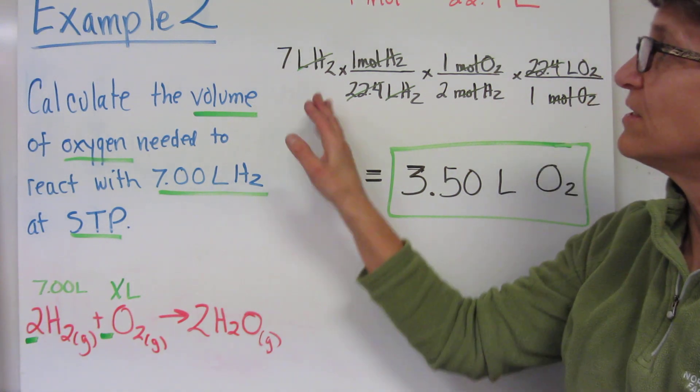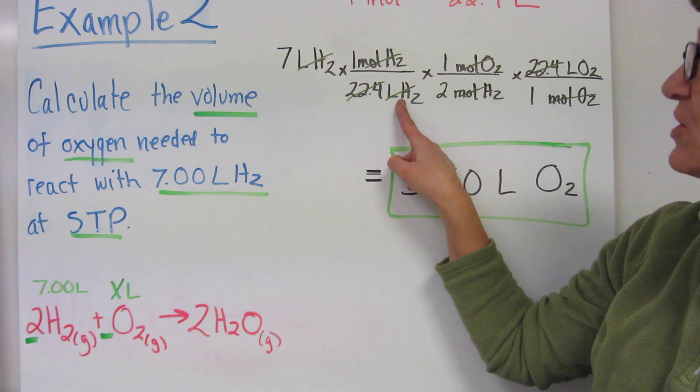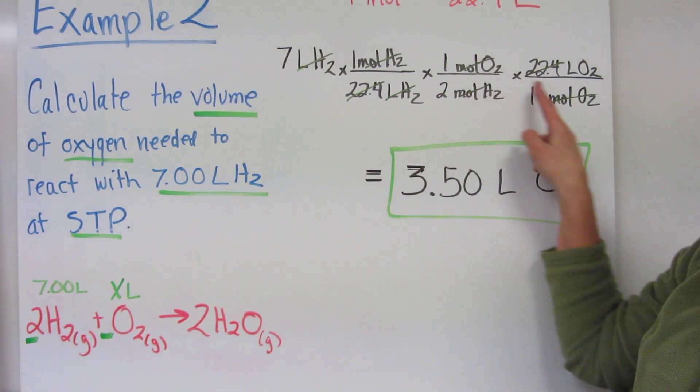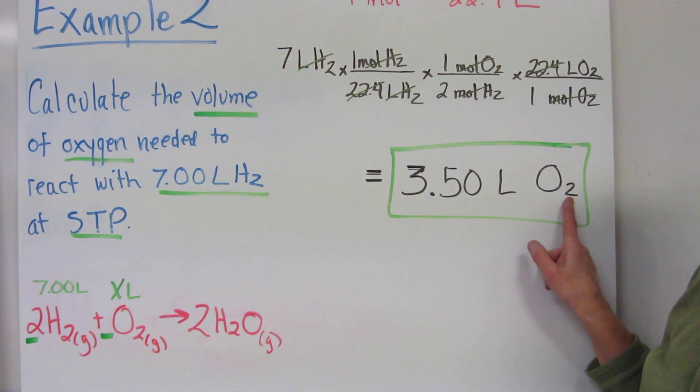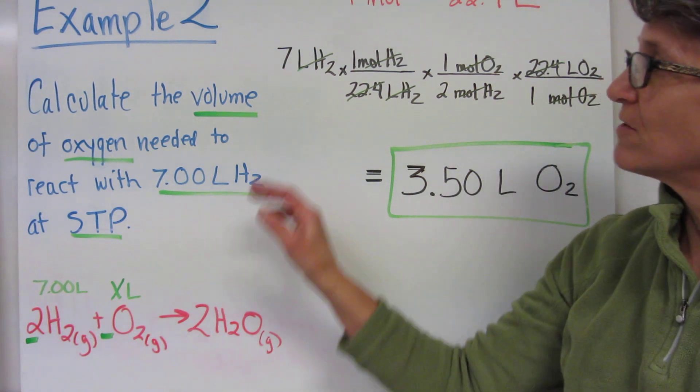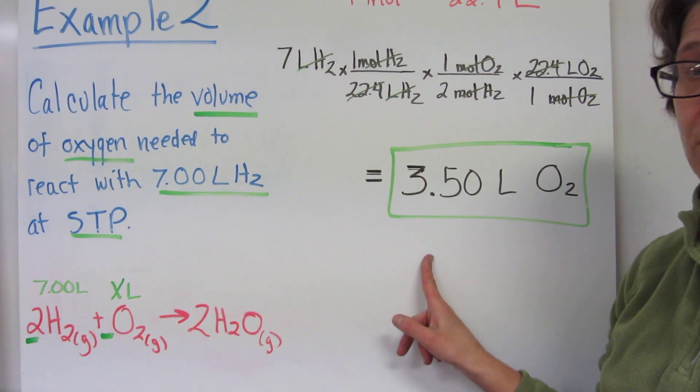When you cancel your units, you'll cancel liters of hydrogen with liters of hydrogen, moles of hydrogen, moles of hydrogen, moles of oxygen, moles of oxygen, and you're left with your liters of oxygen. Your 22.4 will cancel as well. So mathematically, you just have seven divided by two to give you the 3.50 liters.